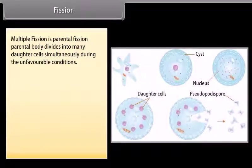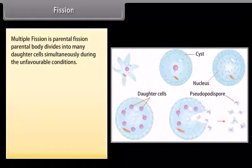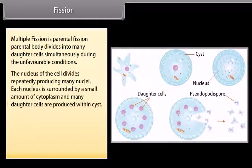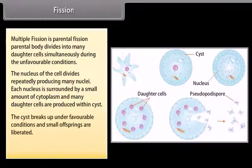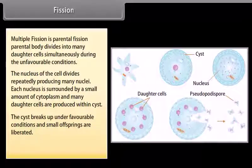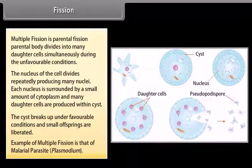Multiple fission: The parental body divides into many daughter cells simultaneously during unfavorable conditions. The nucleus of the cell divides repeatedly, producing many nuclei. Each nucleus is surrounded by a small amount of cytoplasm, and many daughter cells are produced within a cyst. The cyst breaks up under favorable conditions and small offspring are liberated. An example of multiple fission is the malaria parasite Plasmodium.